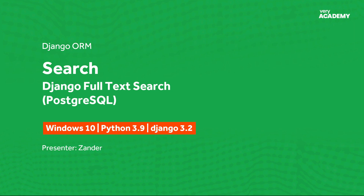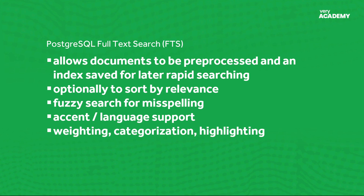A common task or expectation for web applications is to provide search capabilities. In a simple case, this could be filtering a list of objects by category, color, or maybe just size. Full text search features can offer a more advanced way to search a database. A more complex use case might require searching with weighting, categorization, highlighting, multiple languages, and indexing. So these are some of the features we will start to explore in this tutorial using Postgres database full text search features.